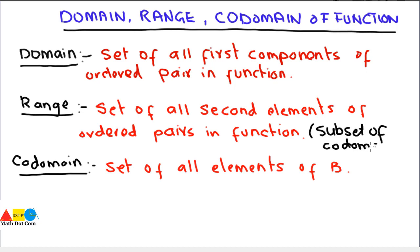Keep this in mind: in range, all elements of B are not included, while in co-domain, all elements of B are included. We will also verify this by using the example.